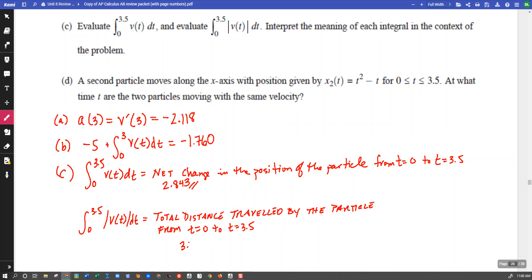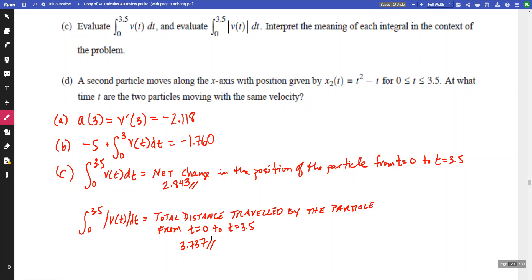So we have 3.737. So that means that our particle, at some time, was moving to the left. And at some time, was moving to the right. So we see that our net change is a little bit less than our total distance.